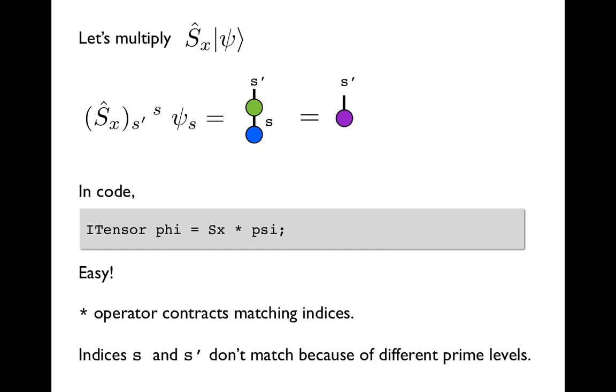So now that we have our Sx tensor, which is our Sx operator, we can do something with it, which is we can act it on our wave function. So remember our wave function tensor was set to just be a single spin pointing in the up direction. So how do we actually apply this tensor Sx to our wave function?